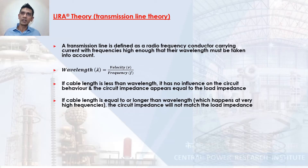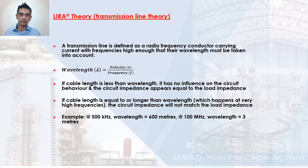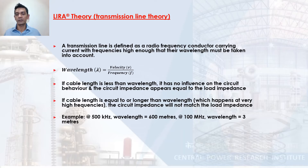However, if the cable length is equal to or longer than the wavelength, the circuit impedance will not match the load impedance, and this occurs at high enough frequencies. For example, at 500 kHz the wavelength is 600 meters, so the shortest cable you can assess is 600 meters. On the other hand, at 100 MHz the wavelength is only three meters, meaning you can assess any cable longer than three meters — that's the concept Lyra uses: high-frequency signal injection to assess cable condition.